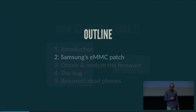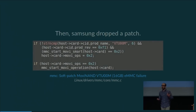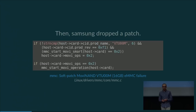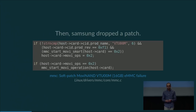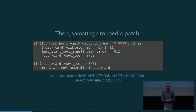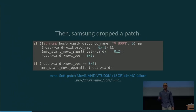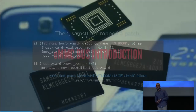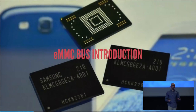Samsung dropped a patch. Since Linux is GPL licensed they had to publish the source code. The patch was called 'soft patch moving VTUOOM eMMC failure' and they modified the code responsible for communicating with eMMC devices. To understand this patch we need to understand what eMMC is.